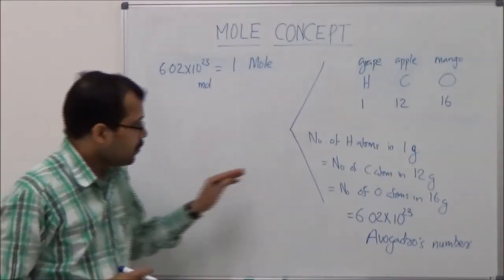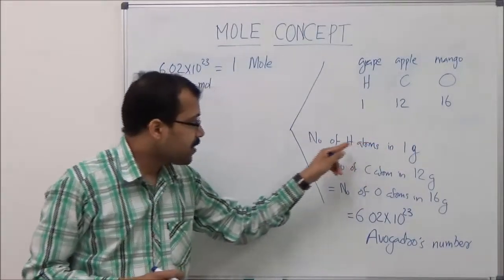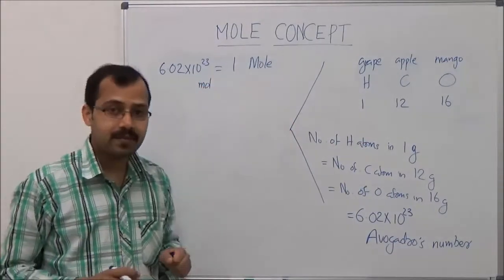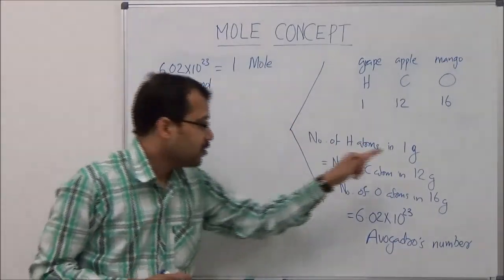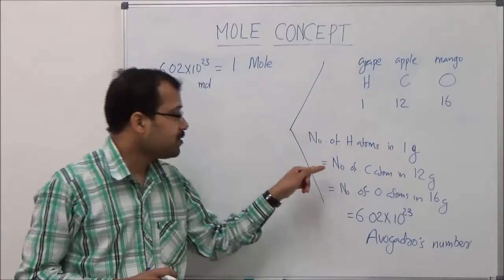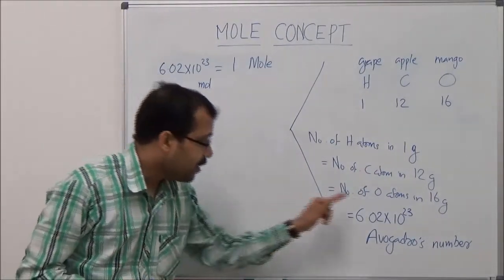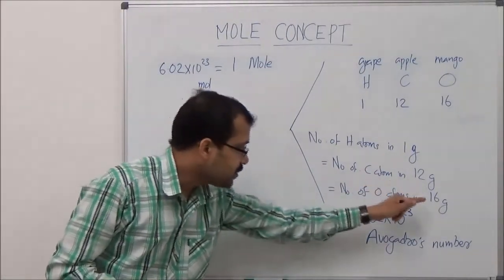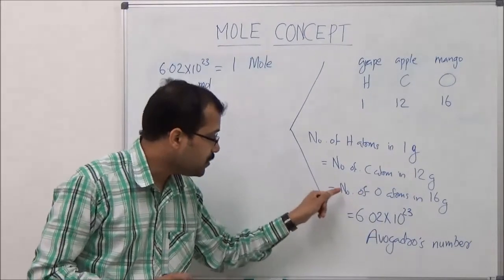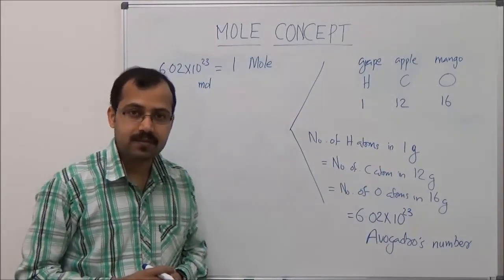So 1 gram of hydrogen contains 1 mole of hydrogen atoms, 12 grams of carbon contains 1 mole of carbon atoms, and 16 grams of oxygen contains 1 mole of oxygen atoms.